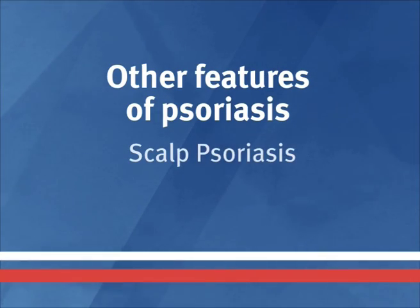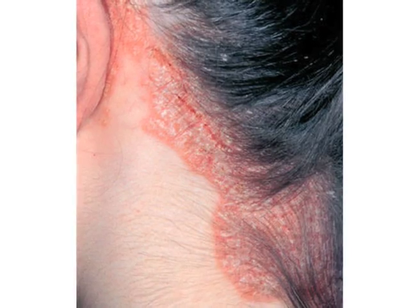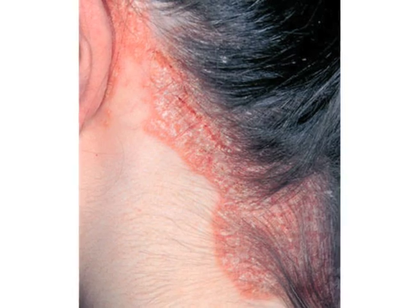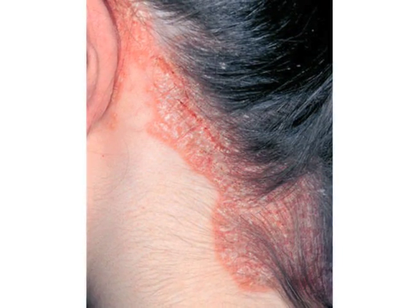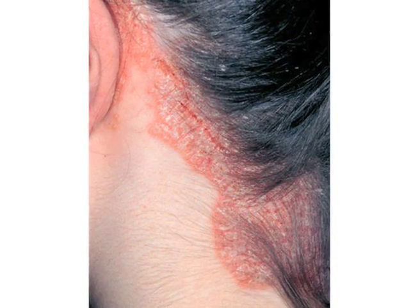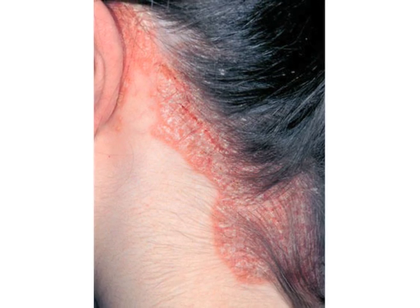Scalp psoriasis affects fifty percent of psoriasis sufferers. The scalp may be the only site affected and therefore can be confused with dandruff. People with mild scalp psoriasis will have dry and flaky scalps, while those with more severe scalp psoriasis will have large plaques with thick scale.